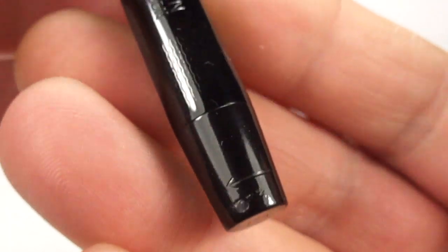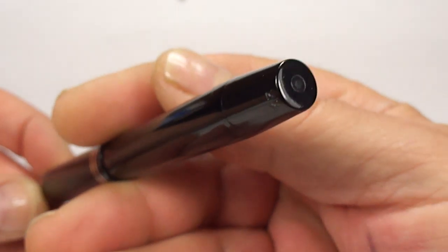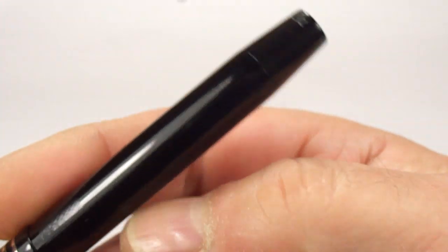To the bottom of the pen, incidentally, this particular one is what we term as a plunger filler. And to the end of the pen there, we've got what we term as the plunger knob there.